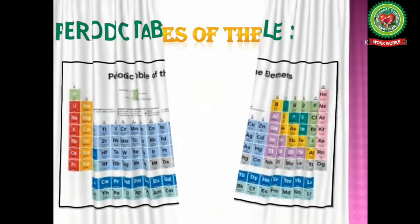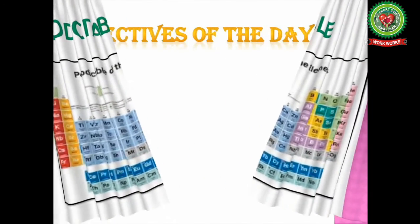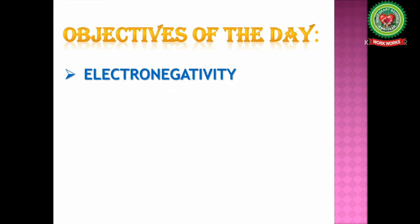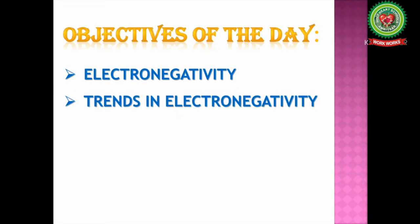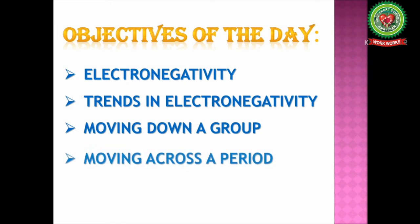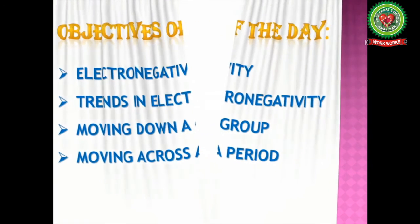Let's start with the objectives of the day. The first objective is what do you mean by electronegativity. The next one is trends in electronegativity while moving down a group and while moving across a period from left to right.